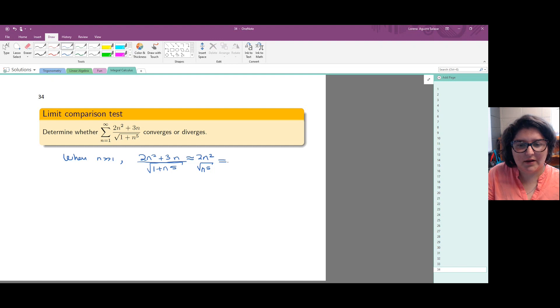Then we can say that we have roughly 2n squared divided by n to the 5, which gives us 2n squared divided by n to the 5 halves. And we end up with 2 divided by n to the 1 half, because 5 halves minus 2 gives us 1 half.